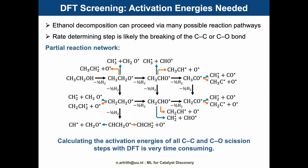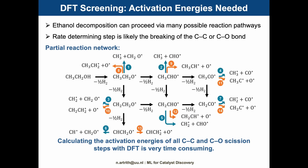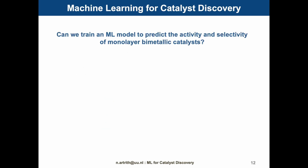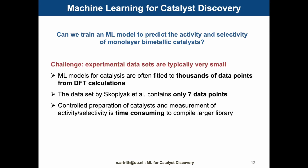From this partial reaction network, I identified all the bond-breaking and bond-forming reactions of CC and CO bonds, yielding 14 reactions. So we were wondering if it would be possible to fit a machine learning model directly to the experimental activity and selectivity. Could we predict the performance of new catalysts? The challenge is that the experimental dataset is extremely small. Machine learning models for catalysts are often fitted to thousands of data points from DFT calculations, but the dataset by the Chen Group only contains seven data points, and it would be very time-consuming to perform all additional experiments.